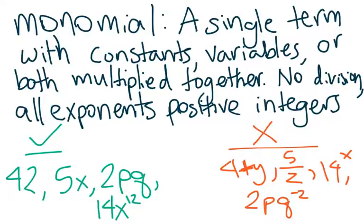There's no division involved in a monomial, and all exponents must be positive integers.